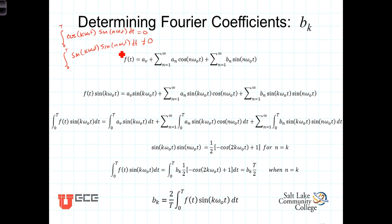So, this then gives us some hint as to what we can do to isolate this b sub n term. We're going to multiply both sides of the equation by the sine of k omega-0 t. And then we're going to integrate.